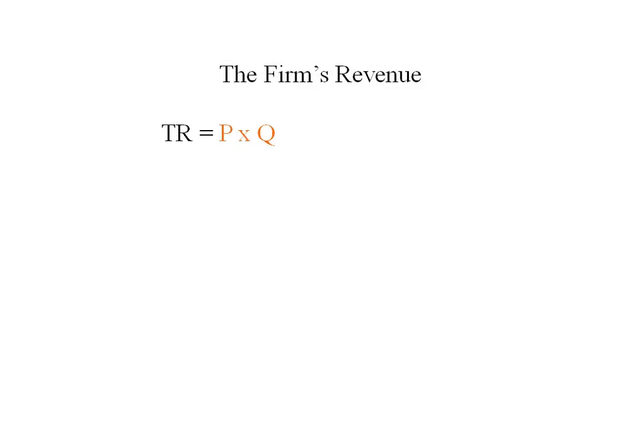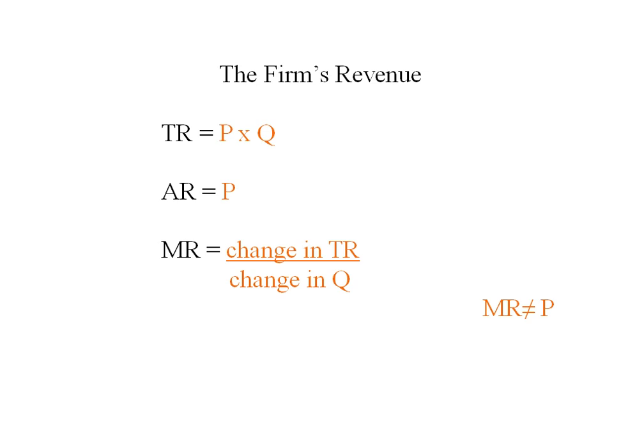Total revenue for any kind of firm is going to be price times quantity. Average revenue for any kind of firm is going to be equal to price. Marginal revenue is always the change in total revenue over the change in quantity, and for a monopolist this will not be equal to price.